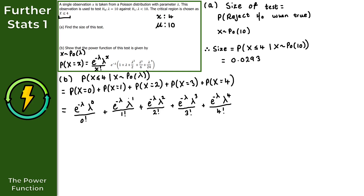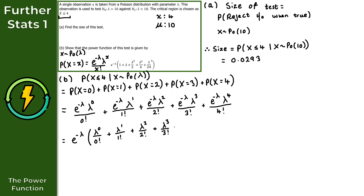Factoring out e^(−λ), we get e^(−λ) times the bracket containing: λ^0 / 0! + λ^1 / 1! + λ² / 2! + λ³ / 3! + λ⁴ / 4!.